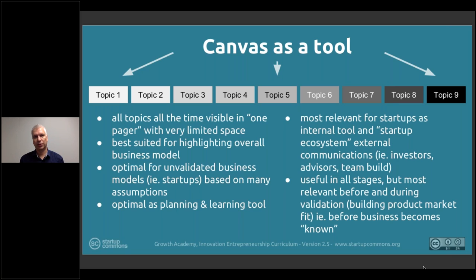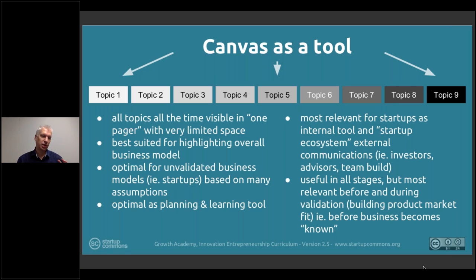When working with this canvas approach, it's much easier to change and revamp the whole business model and any components. When you change something, you see that you also need to change related topics and remove certain bullet points. So it gives you a much faster iteration cycle for the whole business model altogether.